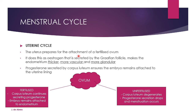The uterine cycle: the uterus prepares for the attachment of a fertilized ovum. Estrogen secreted by the Graafian follicle makes the endometrium thicker, more vascular, and more glandular — these three things prepare the endometrium for embryo attachment. Progesterone secreted by the corpus luteum ensures the embryo remains attached to the uterine lining. If the ovum is fertilized, the corpus luteum continues secreting progesterone and the embryo remains attached. If the ovum is unfertilized, the corpus luteum degenerates, progesterone drops, and menstruation occurs — the endometrium is shed from the uterus.